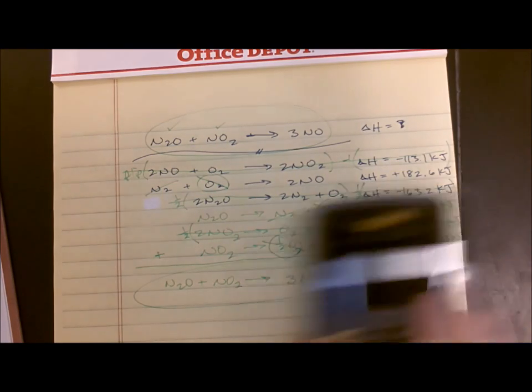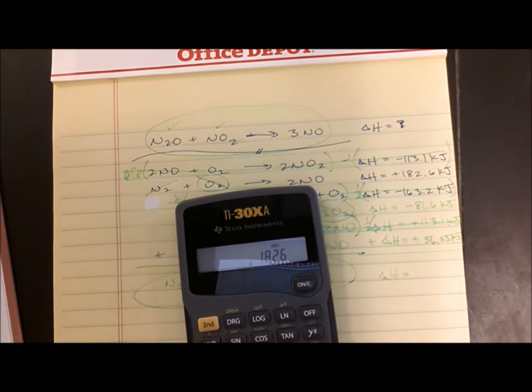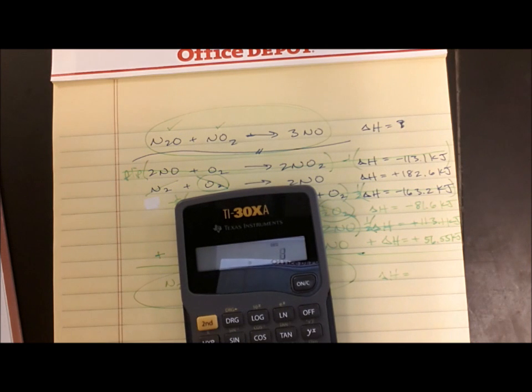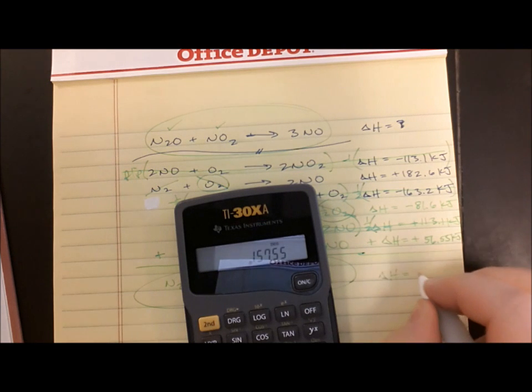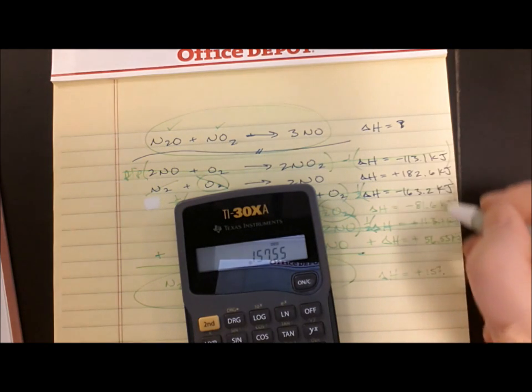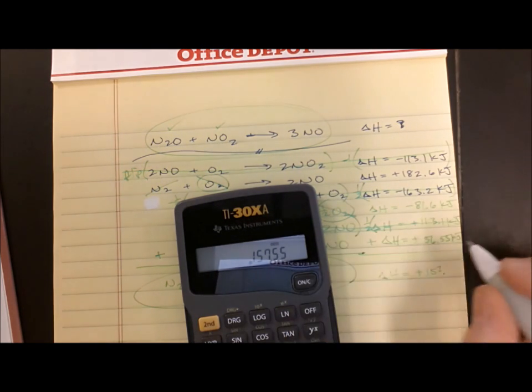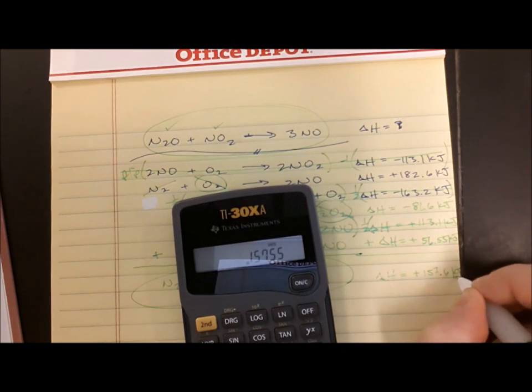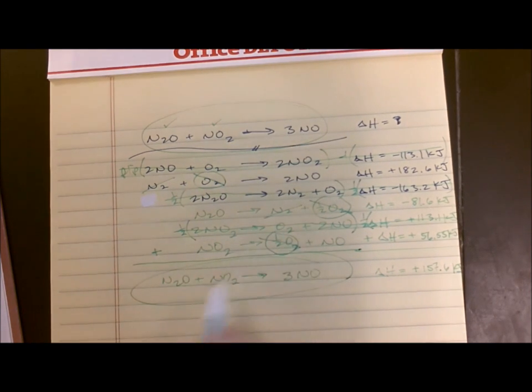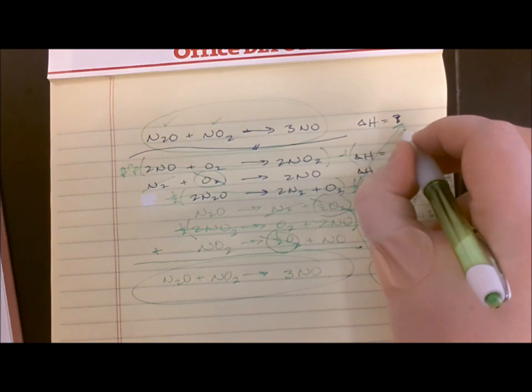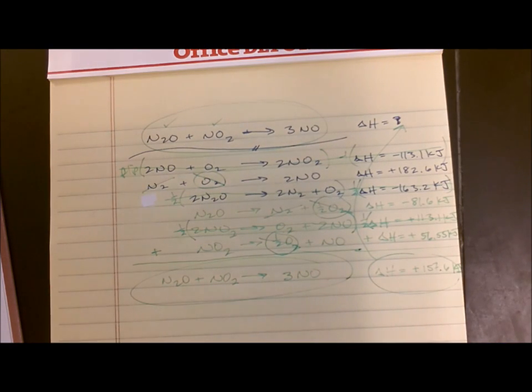So if I have 182.6 minus 81.6 plus 56.55, the delta H for this reaction is positive 157, and lining up my decimals I only get to keep the tenths place, 157.6 kilojoules. So once you add up the equations and the equations add up to give you the reaction you were looking for, then you add up the delta H's and the delta H's add up to give you the delta H that you were looking for. So that's how you do a Hess's Law problem.